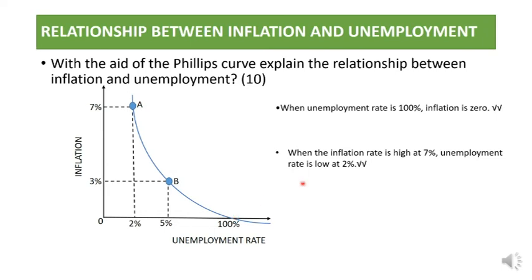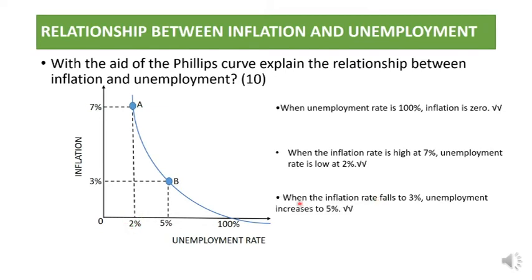When the inflation rate is high — for example at seven percent — the unemployment rate is very low at two percent. When the inflation rate falls to three percent, the unemployment rate increases to five percent. So the lower the inflation rate, the higher the unemployment rate, and the lower the unemployment rate, the higher the inflation.